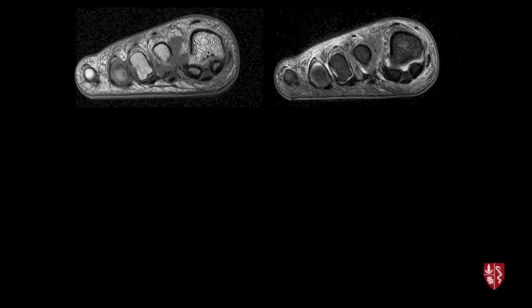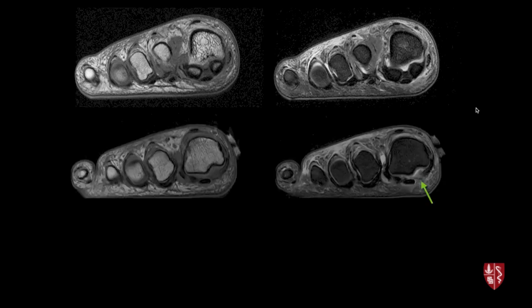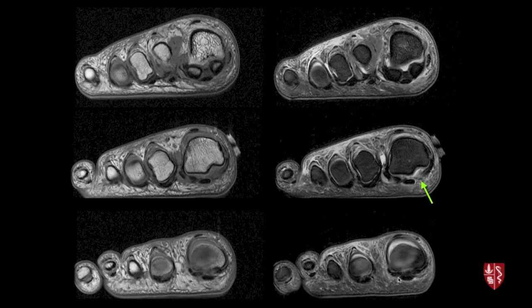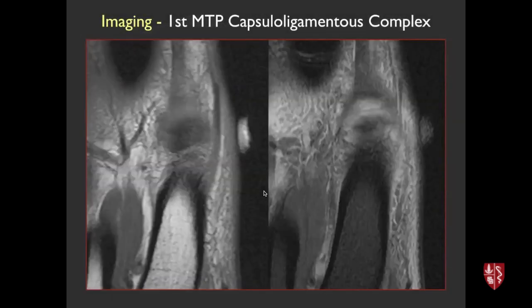Here's an abnormal example. More proximally the sesamoids and intersesamoid ligament look normal, but right here there's increased signal — partial tearing of a component of the plantar plate capsuloligamentous complex — while more distally things are actually okay. The practical approach is to follow structures from proximal to distal and medial to lateral; if you see partial interruption or interruption, that qualifies as a turf toe injury.